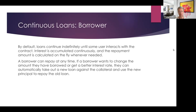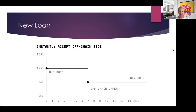So the old rate might have been 15% and the new offer comes in at a lower rate — you repay the old loan with the new one. If you don't have another peer-to-peer offer, it's not possible to refinance.